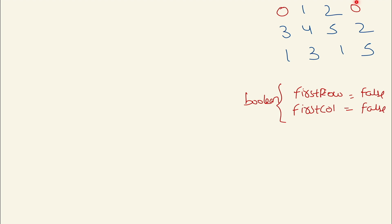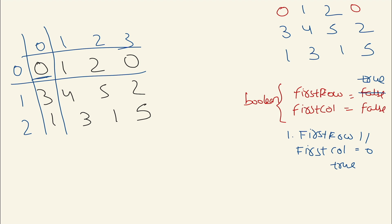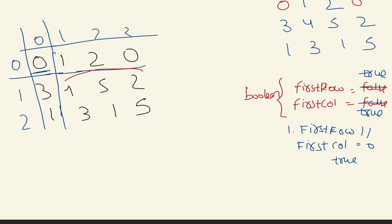Now let's see Example 2. We index it as rows 0,1,2,3 and columns 0,1,2. In the first row we have two zeros, so we set both first-row and first-column boolean flags to true. Now we focus on the inner part of the matrix.